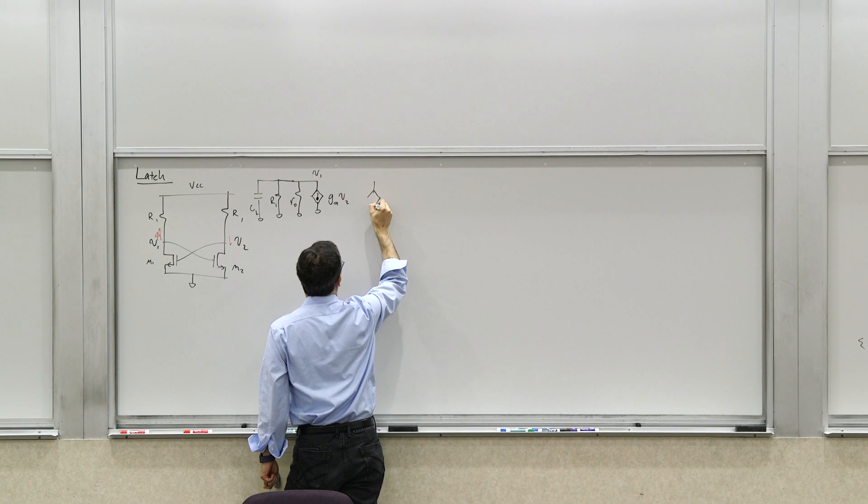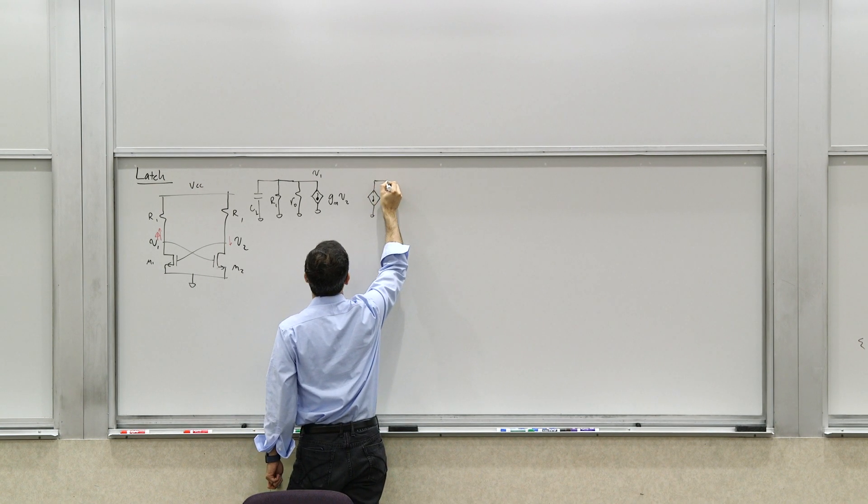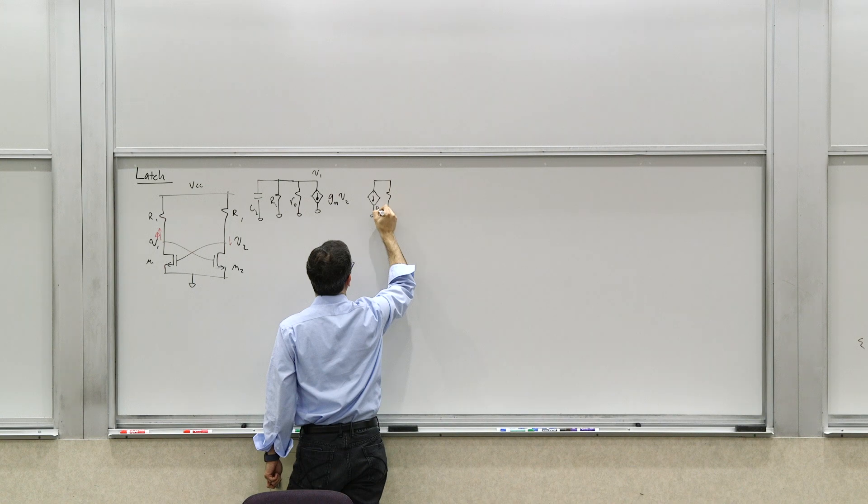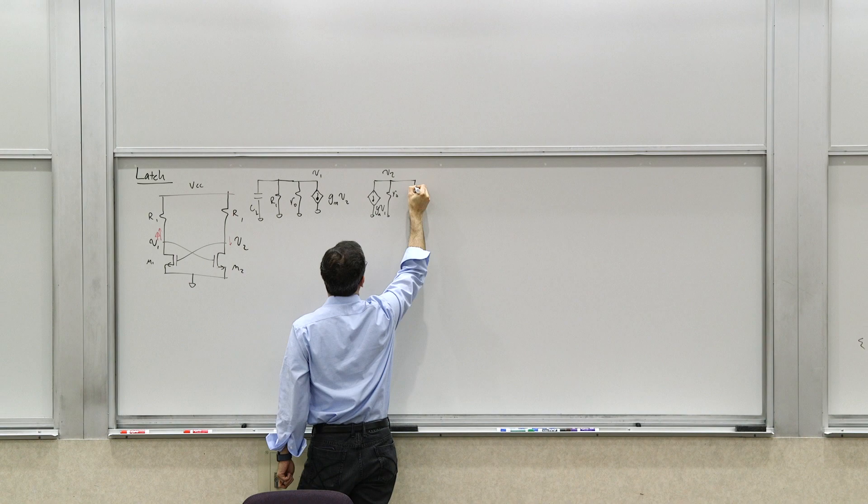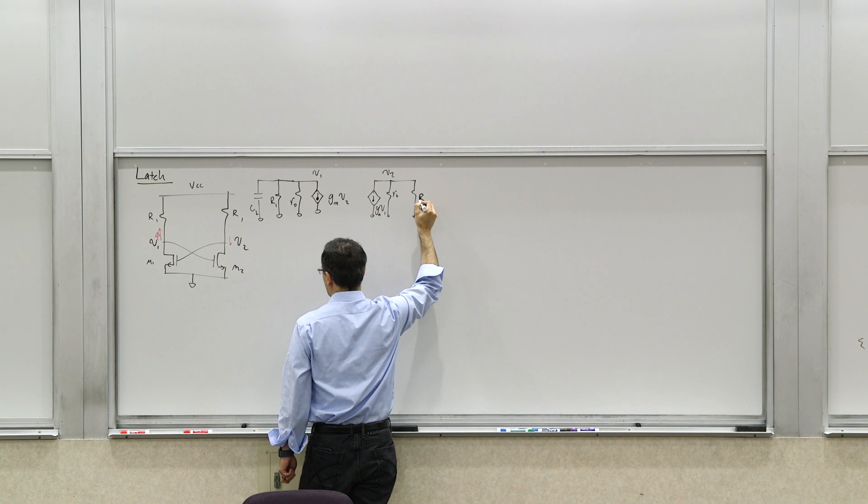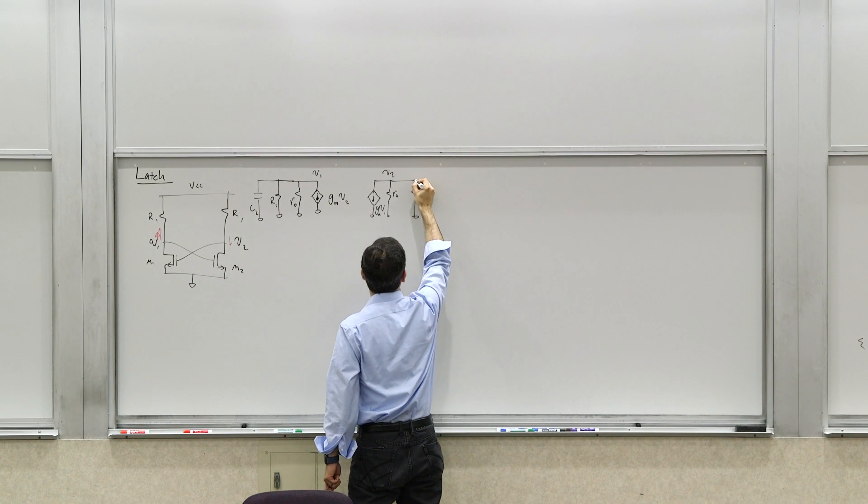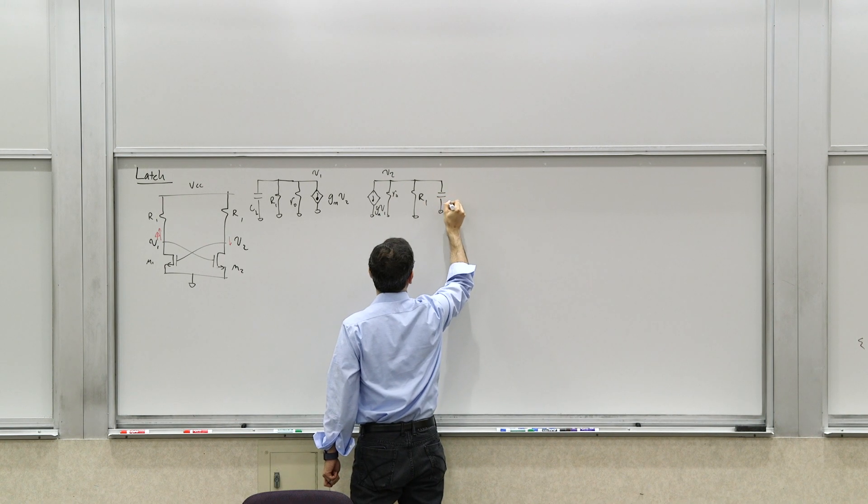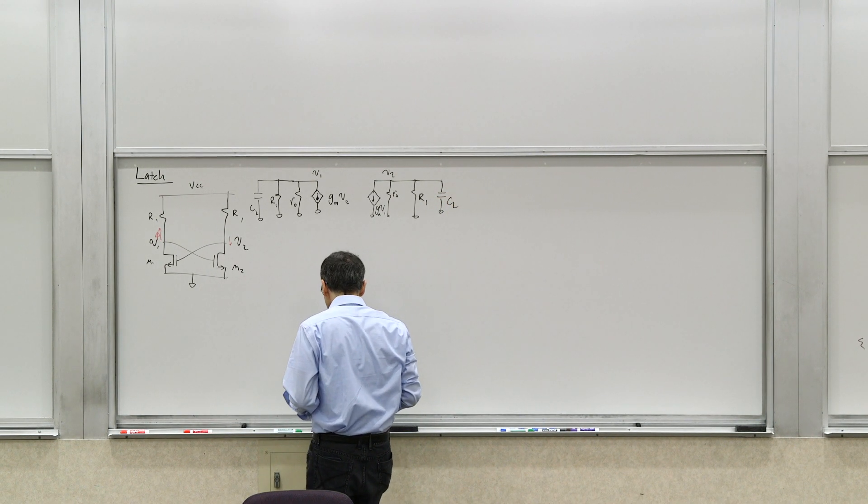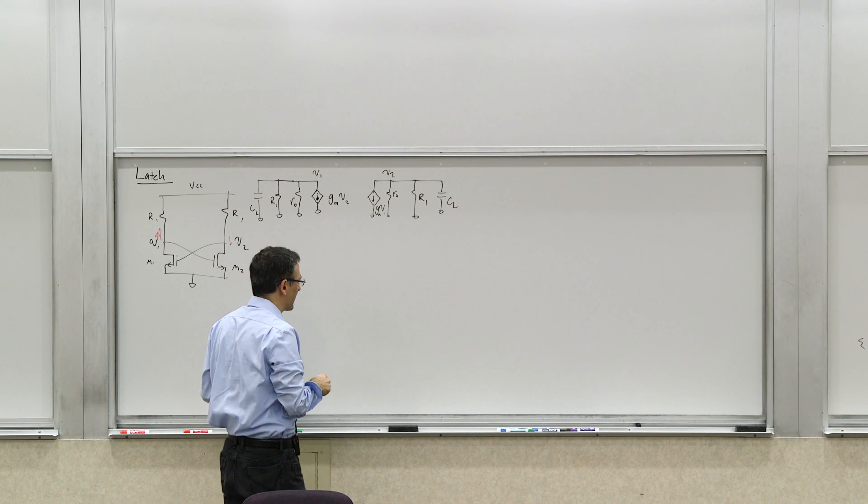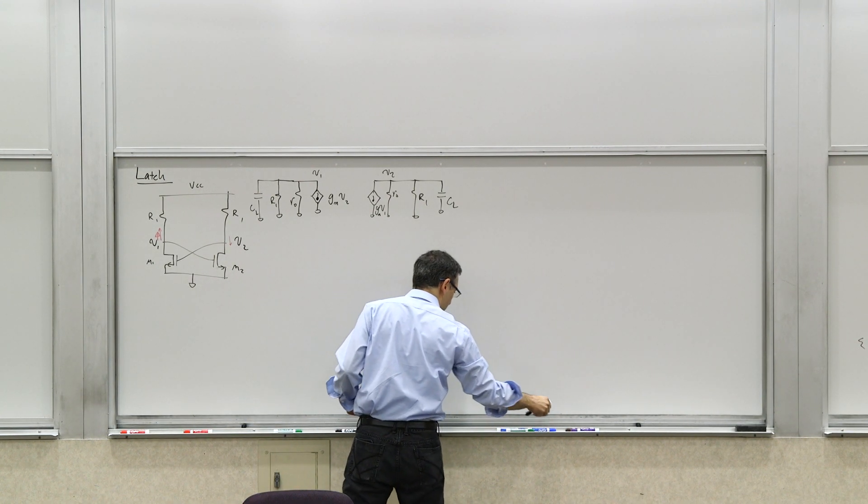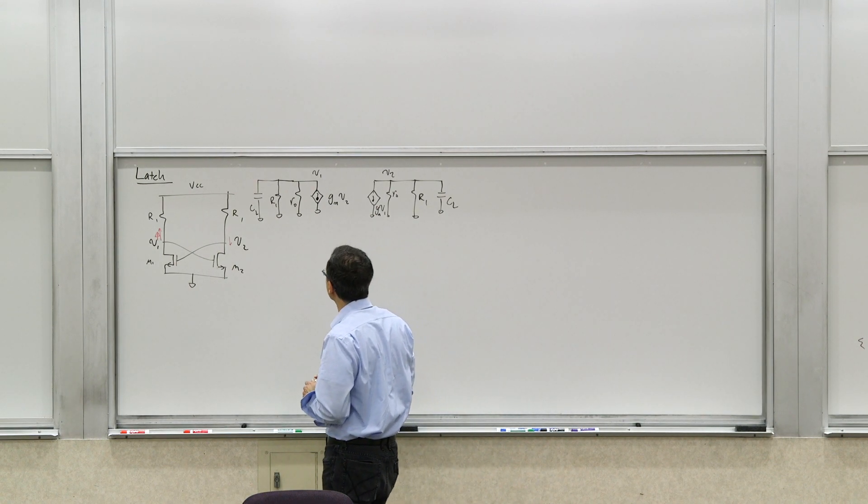And on the right hand side, you have a similar circuit. So this is GMV1. This voltage is V2. This is RO. This is R1. And then there's a capacitance, CL. So these are the two sides of the circuit. We can write differential equations for it.